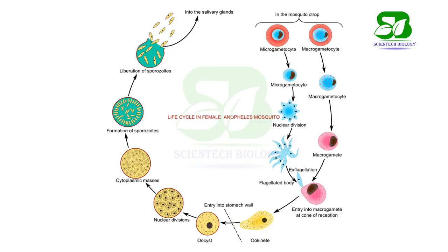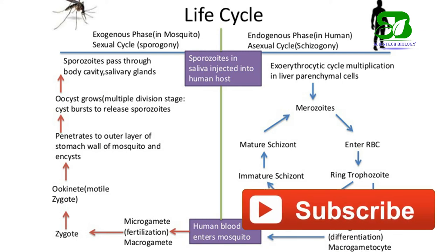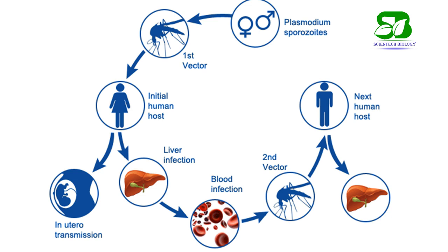During a blood meal, the mosquito ingests these two gametocytes into its gut, where fertilization occurs. As a result, the ookinete stage of Plasmodium develops. The ookinete further changes into the oocyst stage. After 10 days of development, the oocysts mature and burst to liberate sporozoites within the haemocoel of the mosquito. The sporozoites then migrate to the salivary gland of the mosquito, from where they are ready to be transmitted to the next human. Thus, the malaria parasite completes its life cycle in two different hosts.